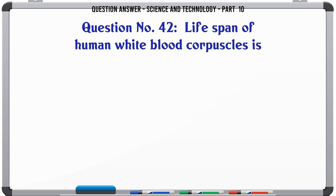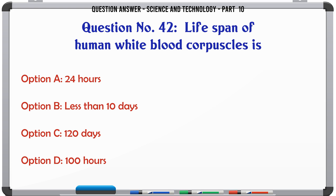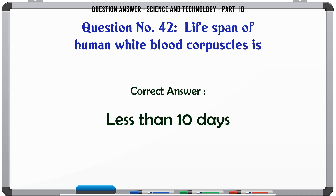Lifespan of human white blood corpuscles is. A. 24 hours. B. Less than 10 days. C. 120 days. D. 100 hours. The correct answer is Less than 10 days.